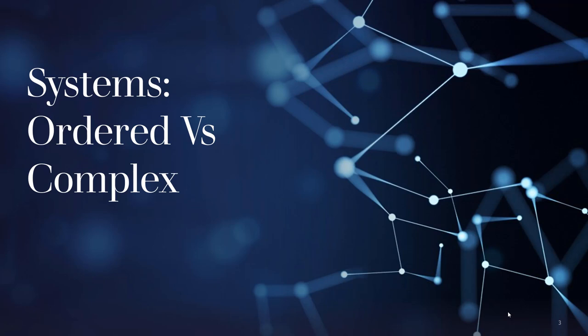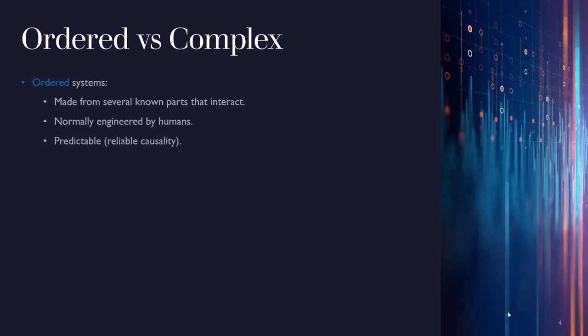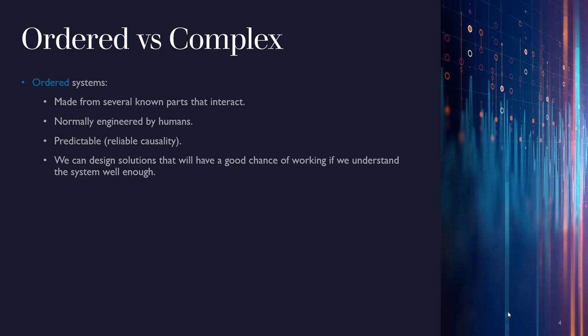To get started we need to make an important distinction between ordered and complex systems in relationship to the business world. Ordered systems are made from several known parts that interact with one another. They're normally engineered by human beings, they're predictable, and in that sense we say they have reliable causality — this part does this, this part does that. We can design solutions that will have a good chance of working if we understand the systems well enough.